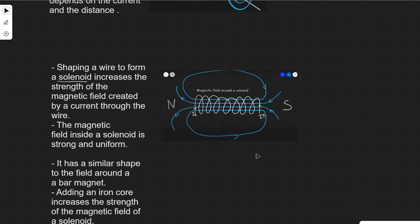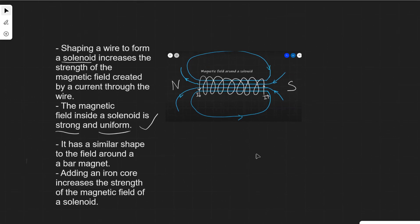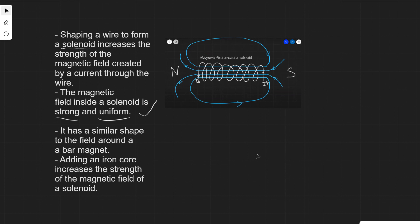The magnetic field inside a solenoid is both strong and uniform. If asked to describe it for two marks, saying the field is both strong and uniform will always give full marks. It has a similar shape to the field around a bar magnet. Adding an iron core will also increase the strength of the magnetic field of the solenoid, and you will typically see them in the lab with iron cores.